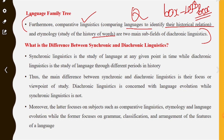To summarize: synchronic linguistics is the study of language at any given point in time, while diachronic linguistics is the study of language through different periods in history. The main difference between them is their focus or viewpoint of study. Diachronic linguistics is concerned with language evolution, while synchronic linguistics is not.